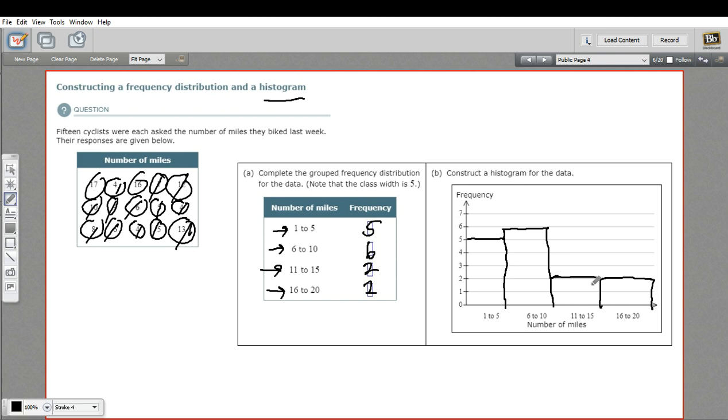So I've got four bars here, each of them coming up to the number of the frequency for each group. And that's how to make a frequency distribution and then what's called a histogram.